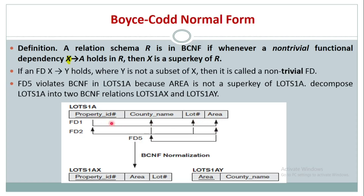Let us concentrate on FD1. The functional dependency says that property ID determines county name, lot number, and area. Here it is a non-trivial functional dependency because county name, lot number, and area is not a subset of property ID. That's the reason it is a non-trivial functional dependency.